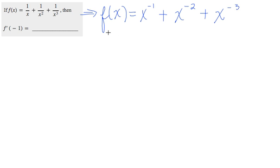Now that it's written like this, we can apply the power rule to differentiate it. So we'll bring the negative one down out front. So it'll become negative one times x to the power of negative one minus one is negative two. And then the same thing here. This negative two is going to come down out front, so I'm just going to write it as negative two instead of plus minus two. Times x to the negative two minus one is negative three. And then the same thing on the last part.